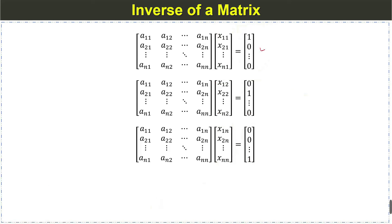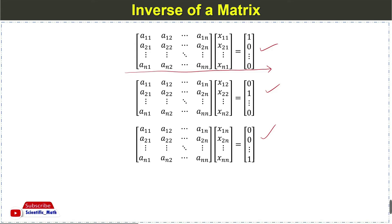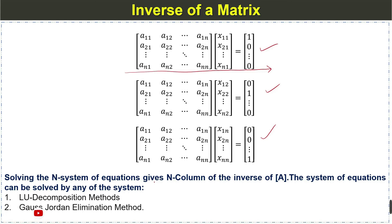We have the first separate system with the first column, the second with the second column, and so on through the nth column. Solving these n systems of equations gives us the n columns of the inverse matrix X.